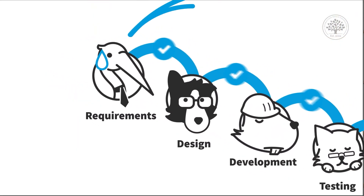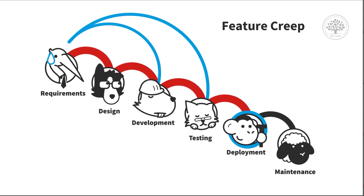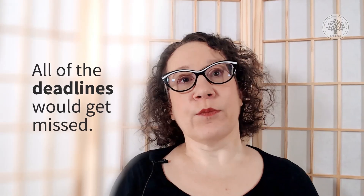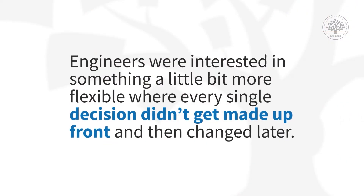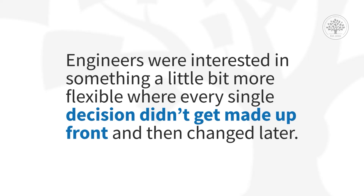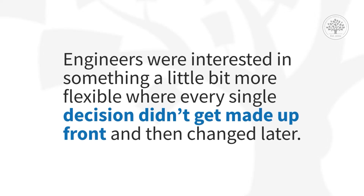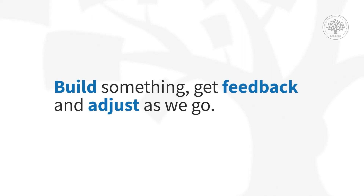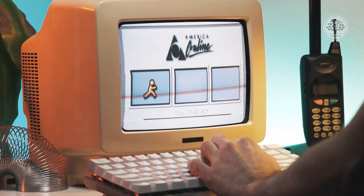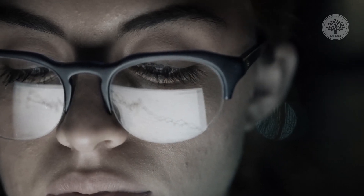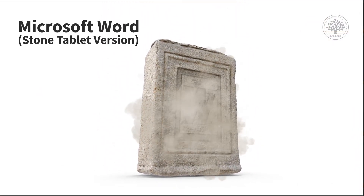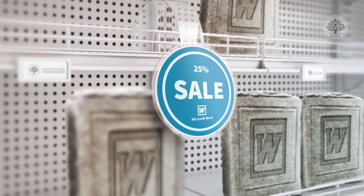Let's not even talk about feature creep, which happened when people from step one realized they'd forgotten a whole bunch of stuff and tried to squeeze it in around step three or four, causing the requirements to balloon out of control and all of the deadlines — which were ridiculous in the first place — would just get missed. Is there really any wonder why the engineers at the time might be interested in something a little bit more flexible? Something where maybe every single decision didn't get made up front and then changed later? Something where we admit that we don't know everything, so we're not going to bother trying to specify everything out to the last bit and byte, and we're going to build some stuff and get feedback and adjust as we go. Throw in the fact that around this time, websites and web applications were really starting to take off, and it was getting a lot easier to get feedback directly from customers and make continuous changes, rather than having to chisel everything into stone before packaging it all up and sending it to the store to sit on shelves — which is how people used to buy software.